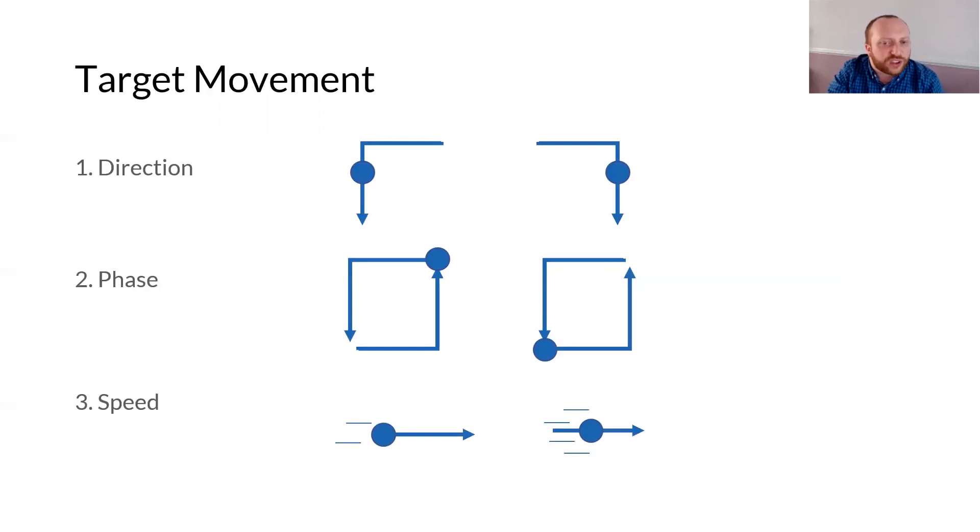Once we have extracted the outlines, we can augment them with target movements to be used for smooth pursuit selection. The goal here is that each moving target moves in a unique trajectory. Unlike previous smooth pursuit approaches, the shape of the trajectory is dependent upon the object outline.